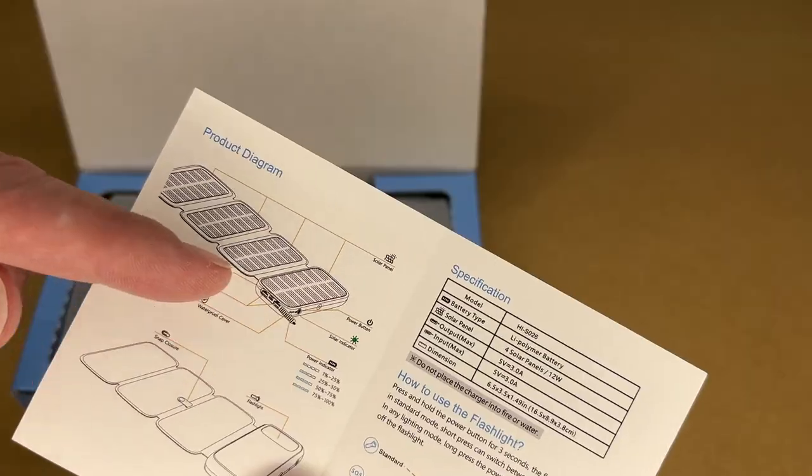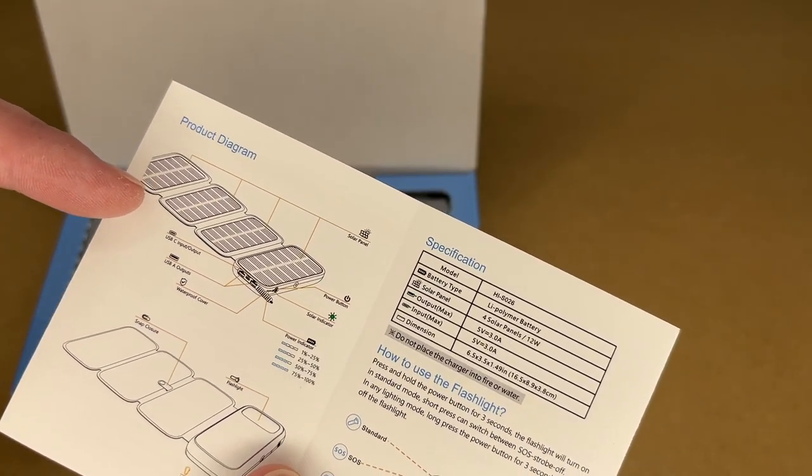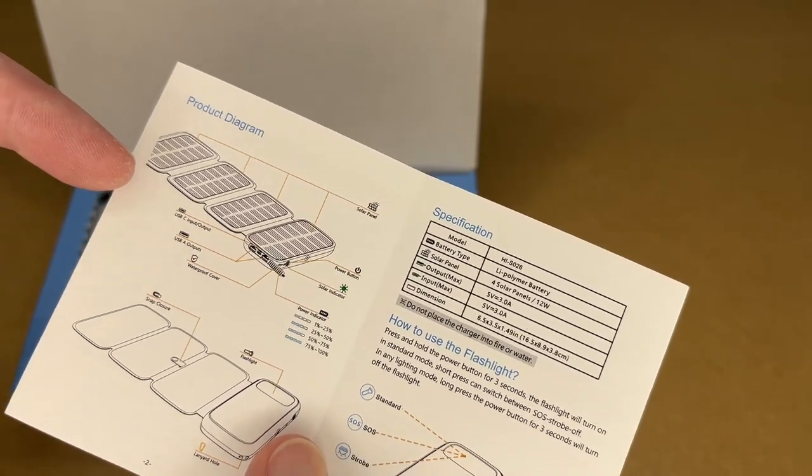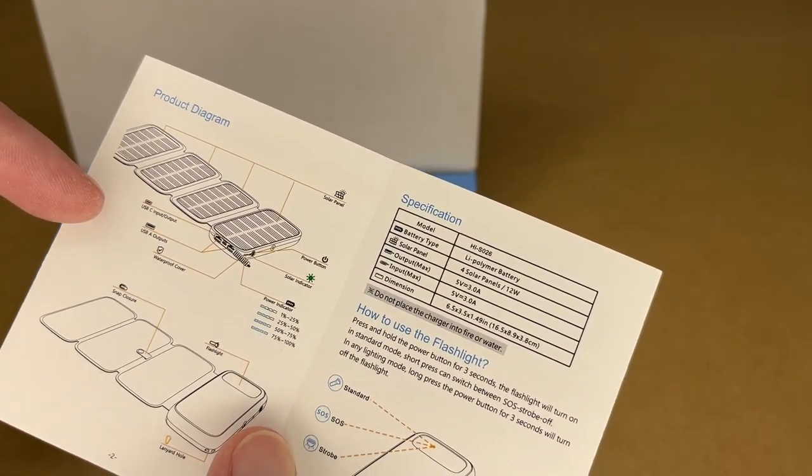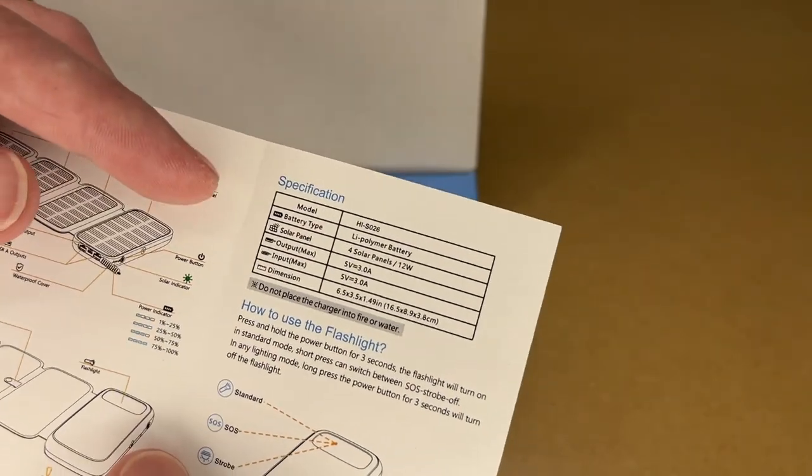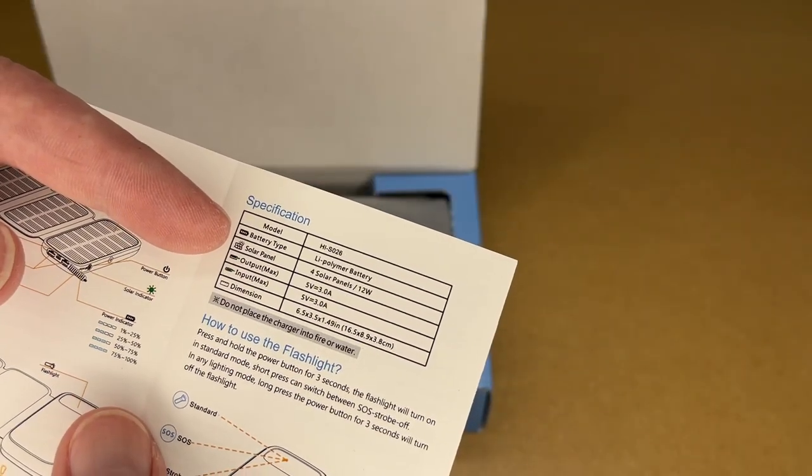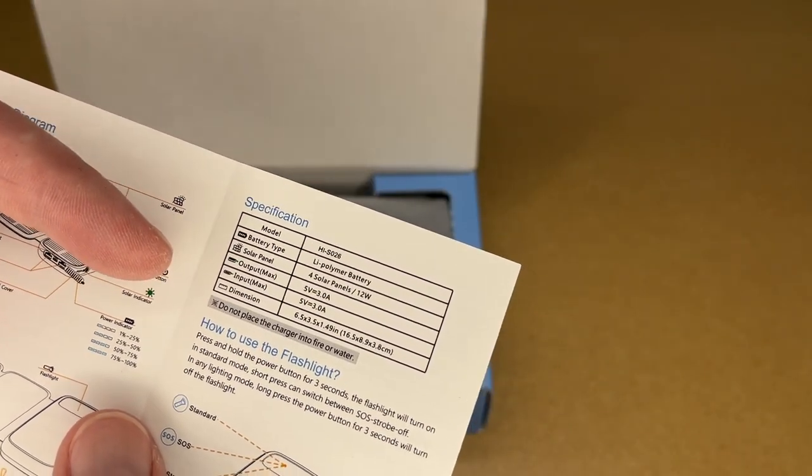Here we have a manual. So this has a fold-out solar panel, it's 12 watts. This has three USB ports, it has USB-C input and output, and then two USB-A out. It has a built-in flashlight, here are the specs. Output max is 5 volts at 3 amps, input max is also 5 volts at 3 amps.